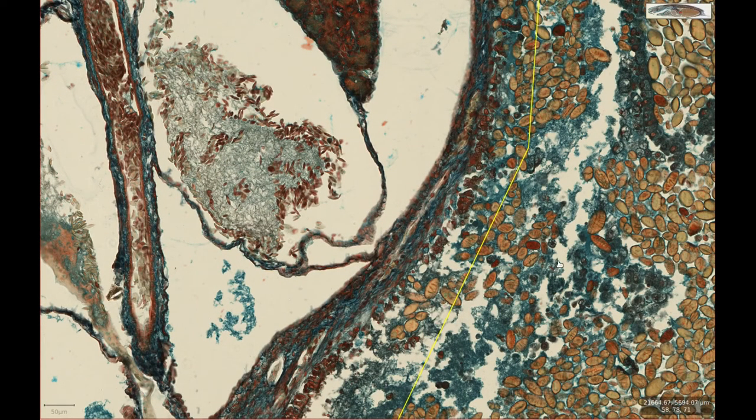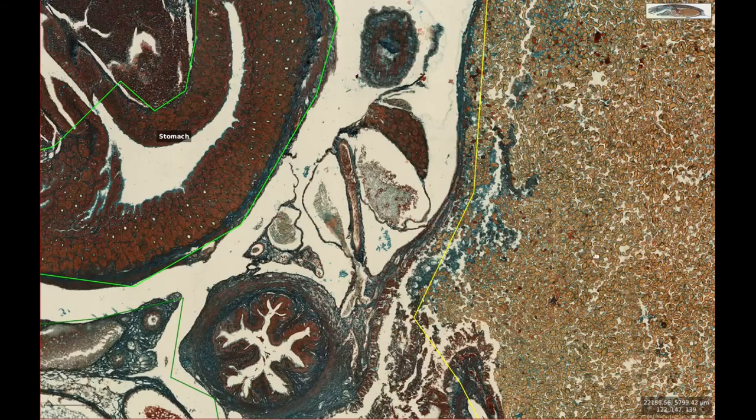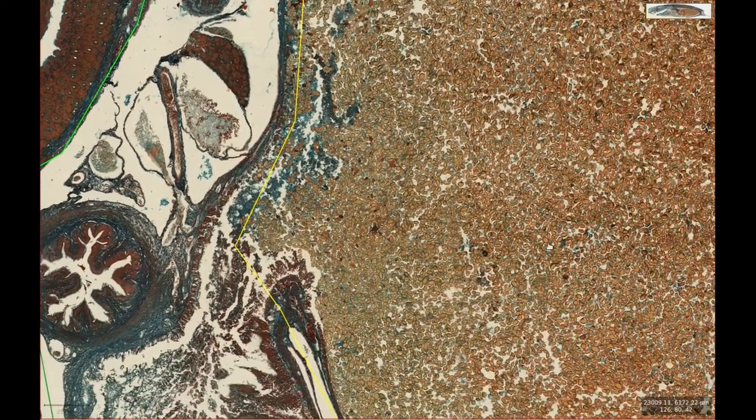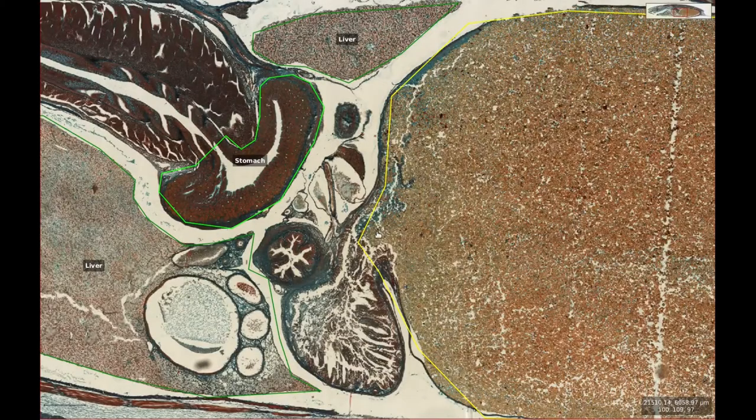The globules are much bigger with a variety of different sizes and shapes. Actually, these globules are made up of yolk, and the large structure containing them is the yolk sac, which feeds the dogfish during development much like the yolk of a bird's egg. In this section we can even see the connection between the yolk sac and the intestines.